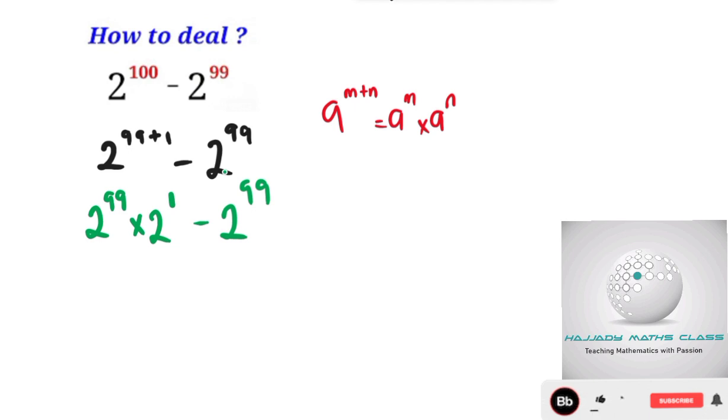So with this, we can factor out 2 to the power of 99 which is common to both sides. So to factor that out, we have 2 to the power of 99, and we have 2 to the power of 1 which is 2 minus 1.